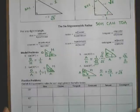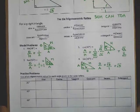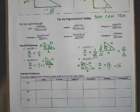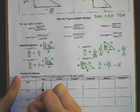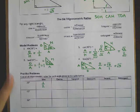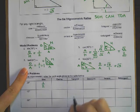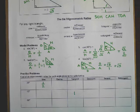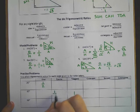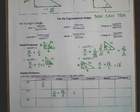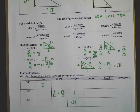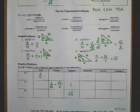For practice, fill in all of the trig ratios in the table. So far we know: sine of 30 is one half, tangent of 45 is 1, cosine of 45 is 1 over root 2 which equals root 2 over 2, and tangent of 60 is root 3. Your practice is to go through and fill out the rest of the table.